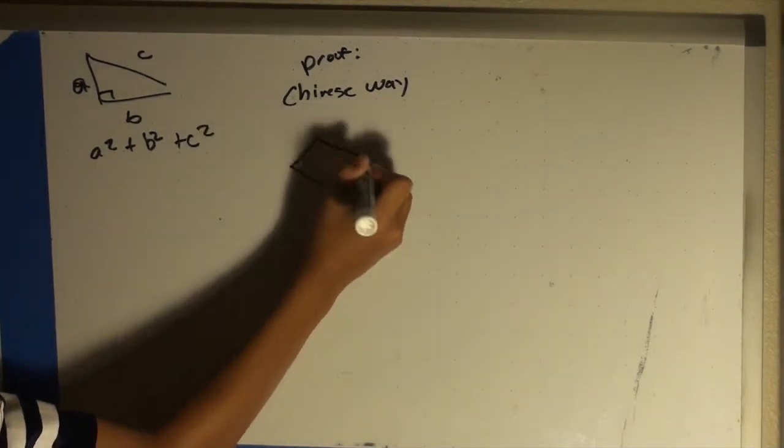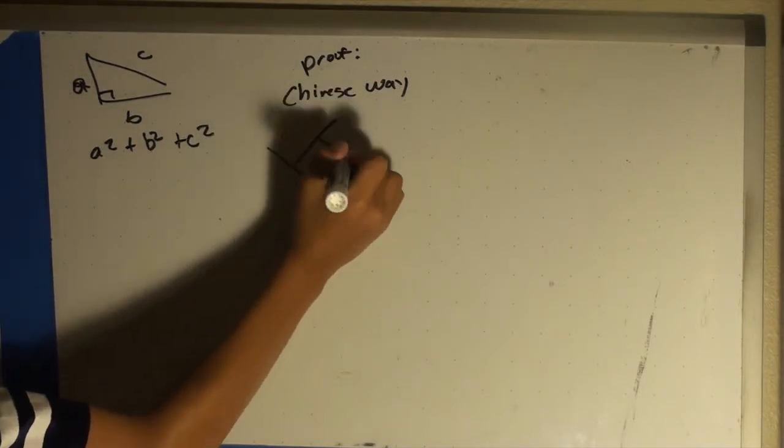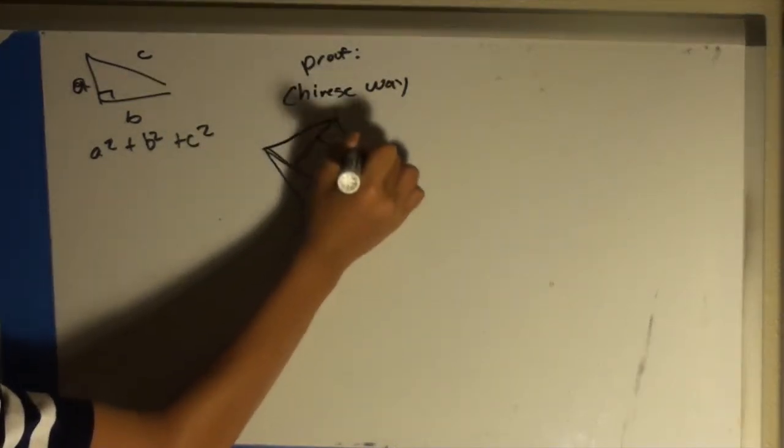Steps to prove it: draw a slanted square, extend the sides so it looks like that, and then connect those sides to make a bigger square.